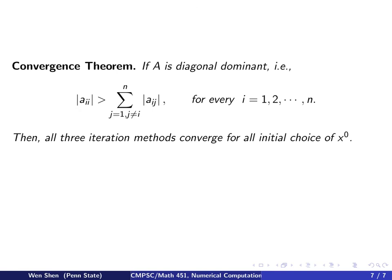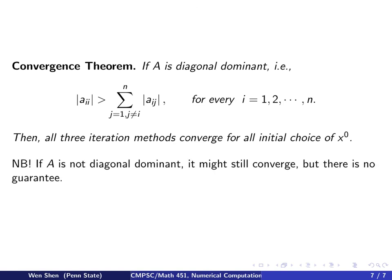But how fast do they converge? That's another question. On the other hand, if A is not diagonal dominant, it might still converge, but it's not guaranteed by this theorem.